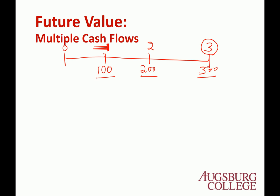That means we need to calculate the future value of these cash flows. When you calculate the future value or present value of multiple cash flows, you basically have to separately think of each cash flow as a lump sum. So $100 at year 1, $200 at year 2, and $300 at year 3 are each treated separately.